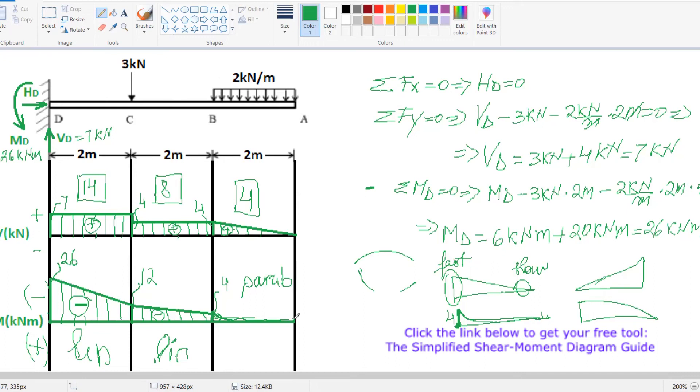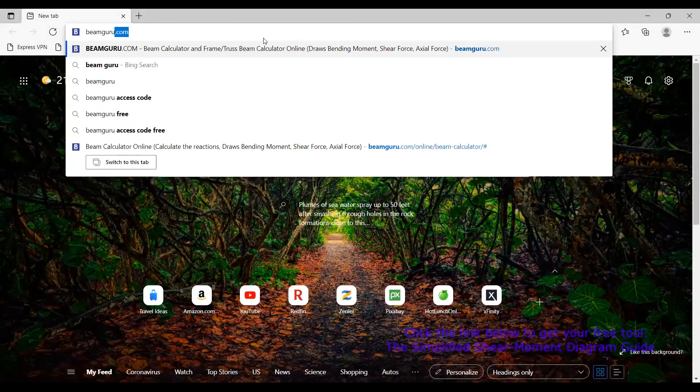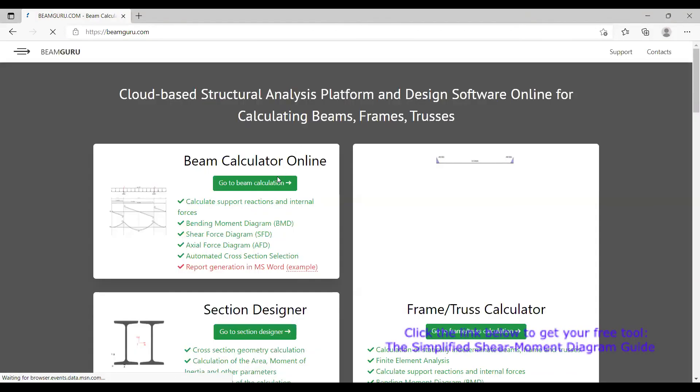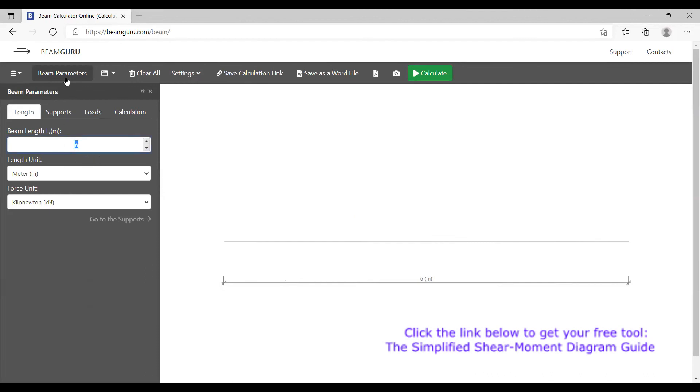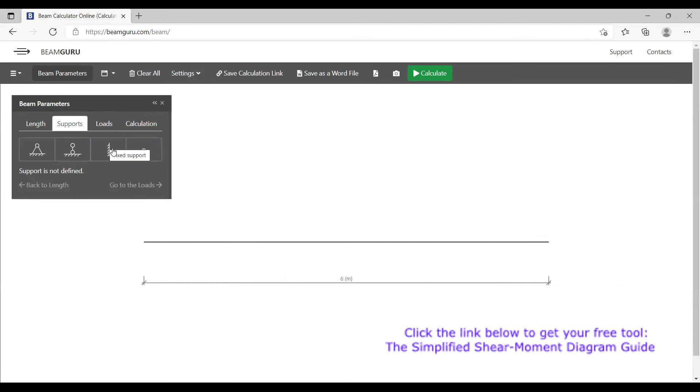Moving forward, I want to show you how you can verify your work by using the free online tool I was talking about at the beginning of the video. You have to go to beamguru.com, go to beam calculator. Our beam length is six. We work in meters and kilonewtons. Now let's go to the supports. We have a cantilever beam, so this is our support on the left side.